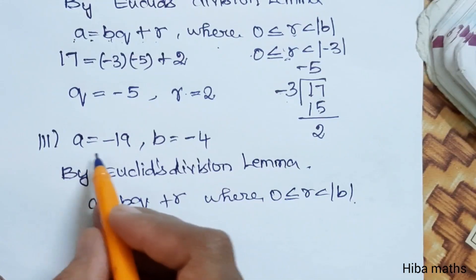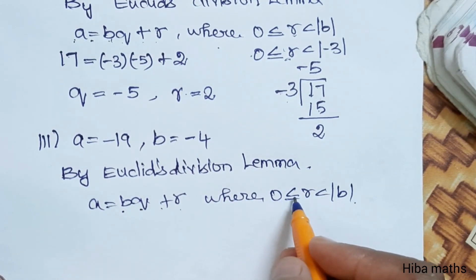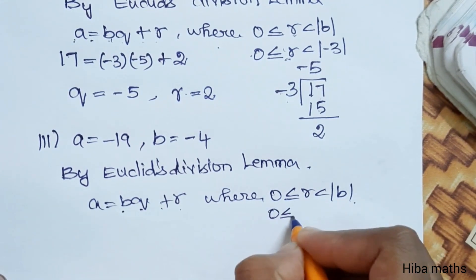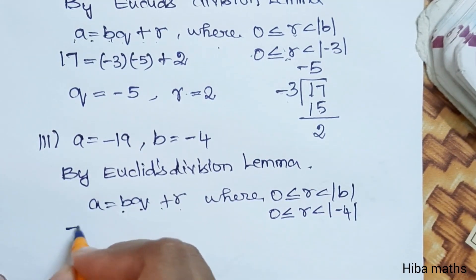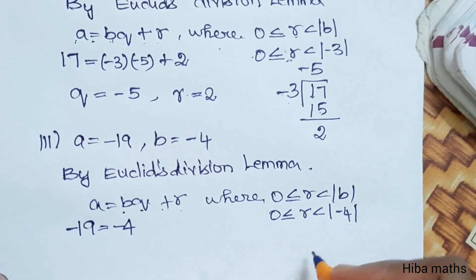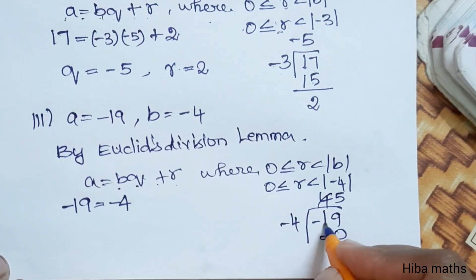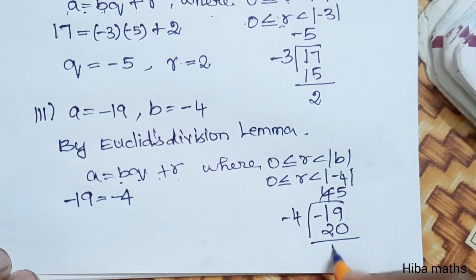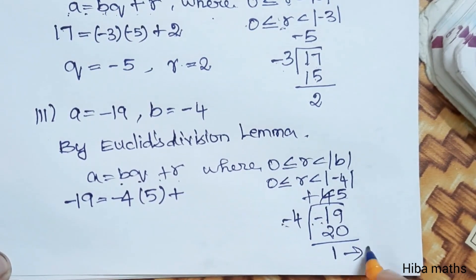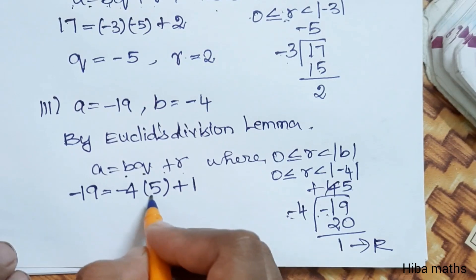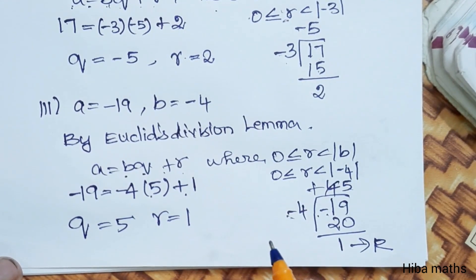Third subdivision: a is equal to minus 19 and b is equal to minus 4. By EDA, a is equal to bq plus r, where r is greater than or equal to 0 and less than modulus of b. The modulus of b is 4. So we divide minus 19 by 4. We take 4 times 5 equals 20. So 20 minus 19 is 1, remainder is 1. So quotient is 5 and remainder is equal to 1. Thank you so much for watching.